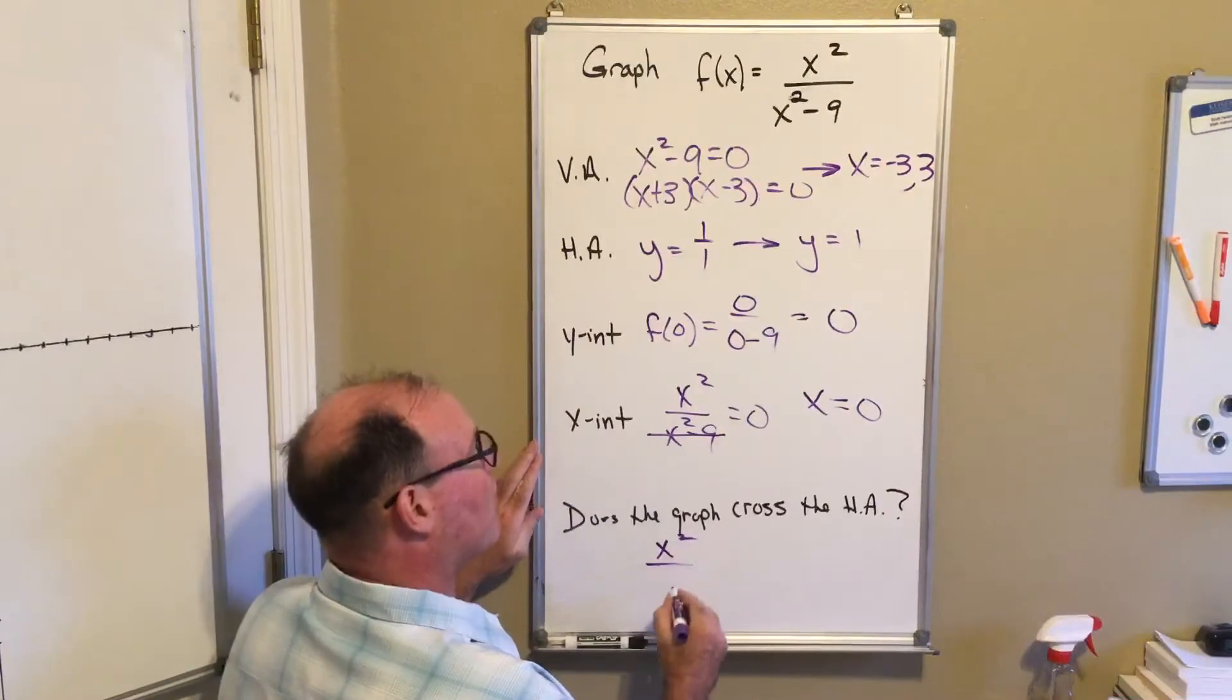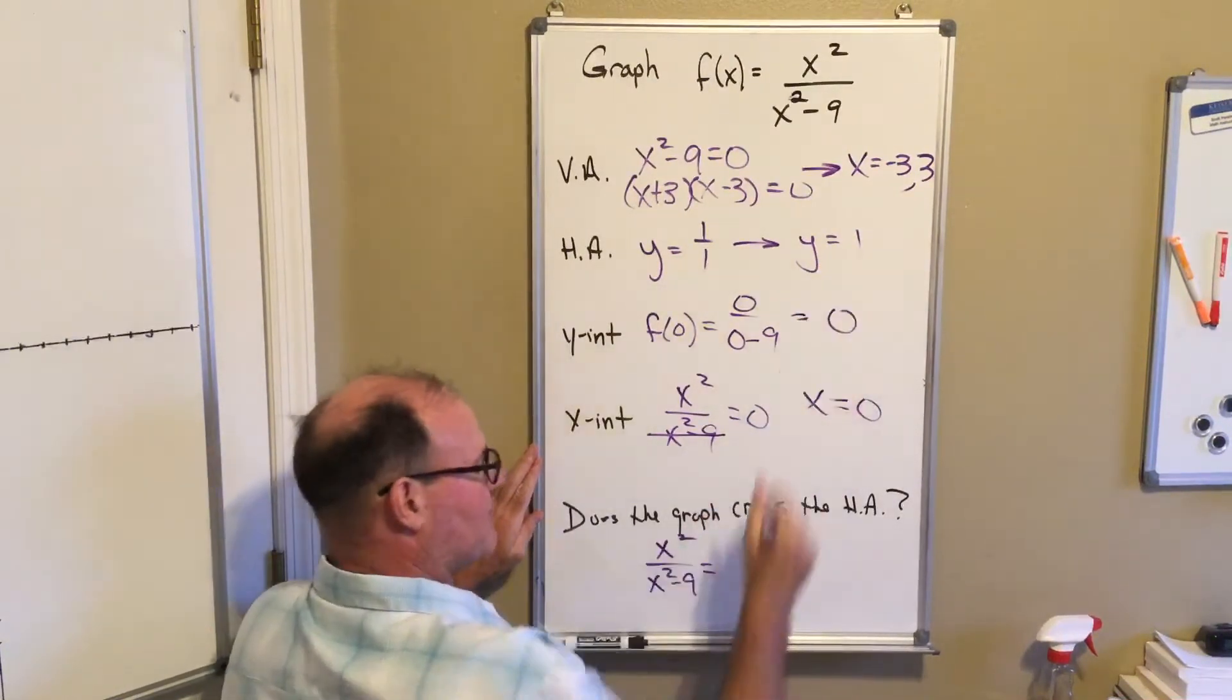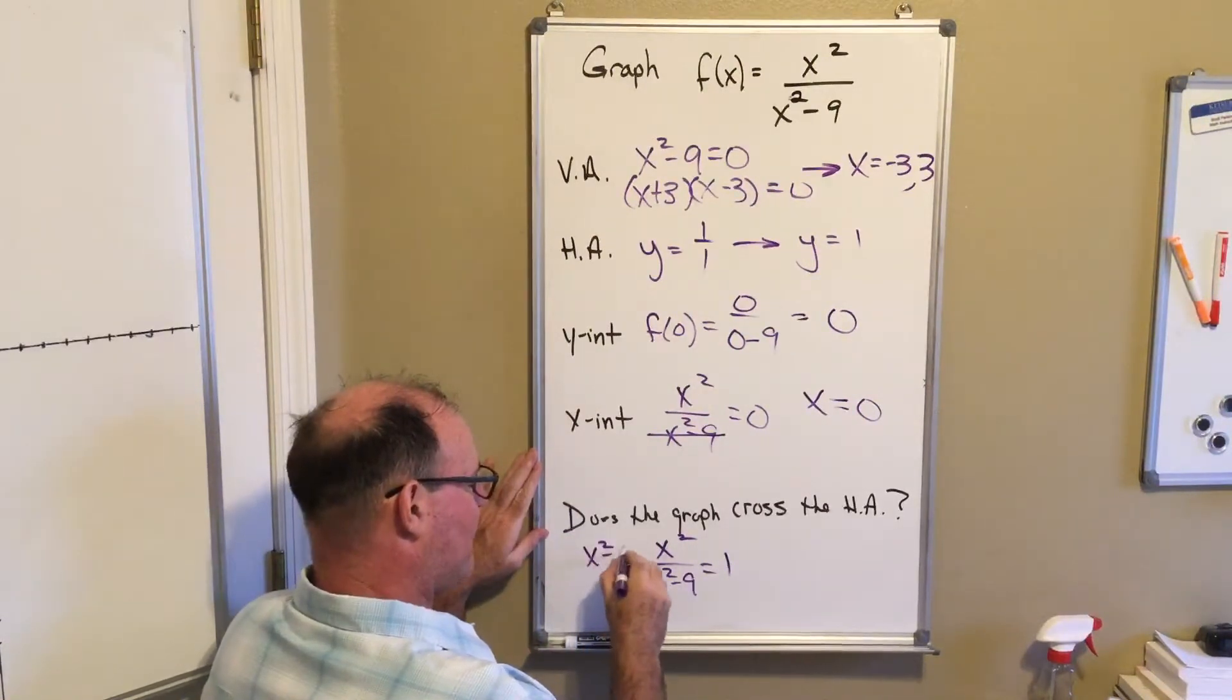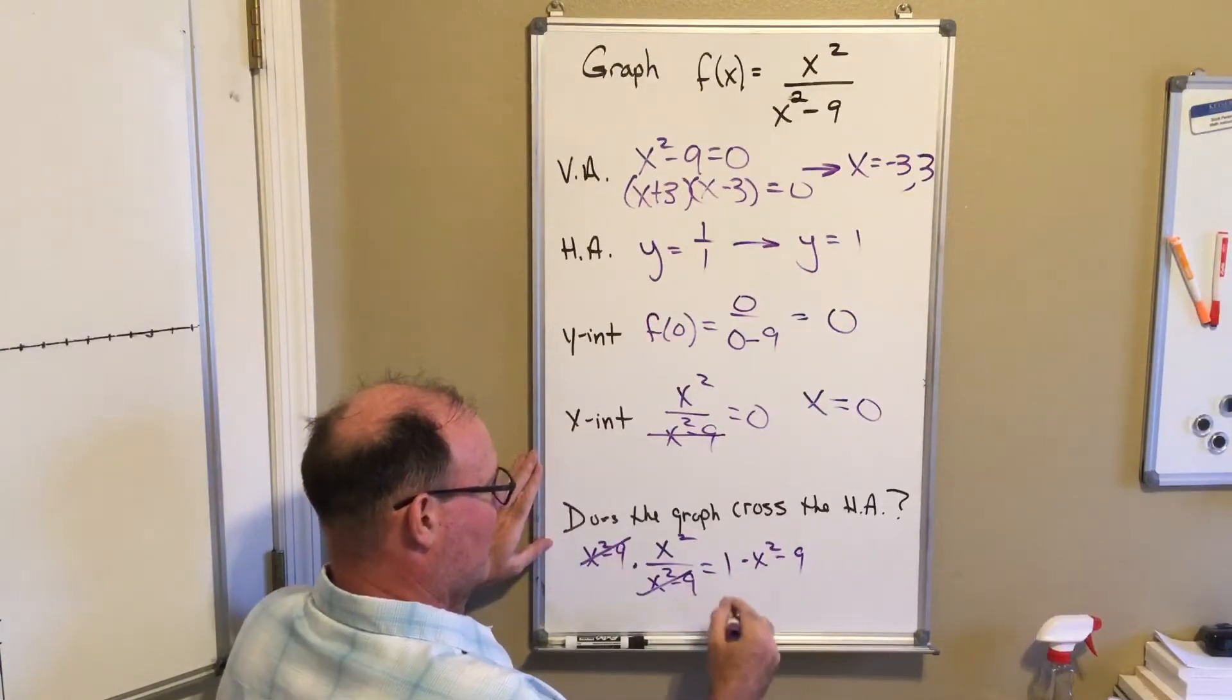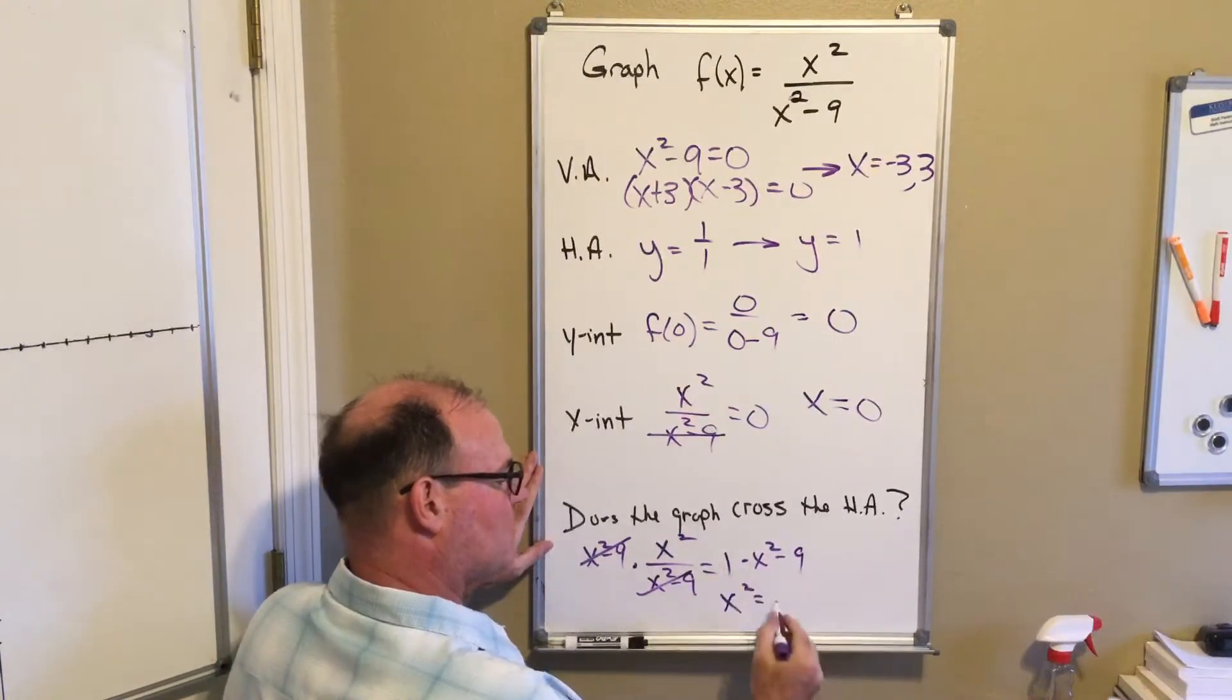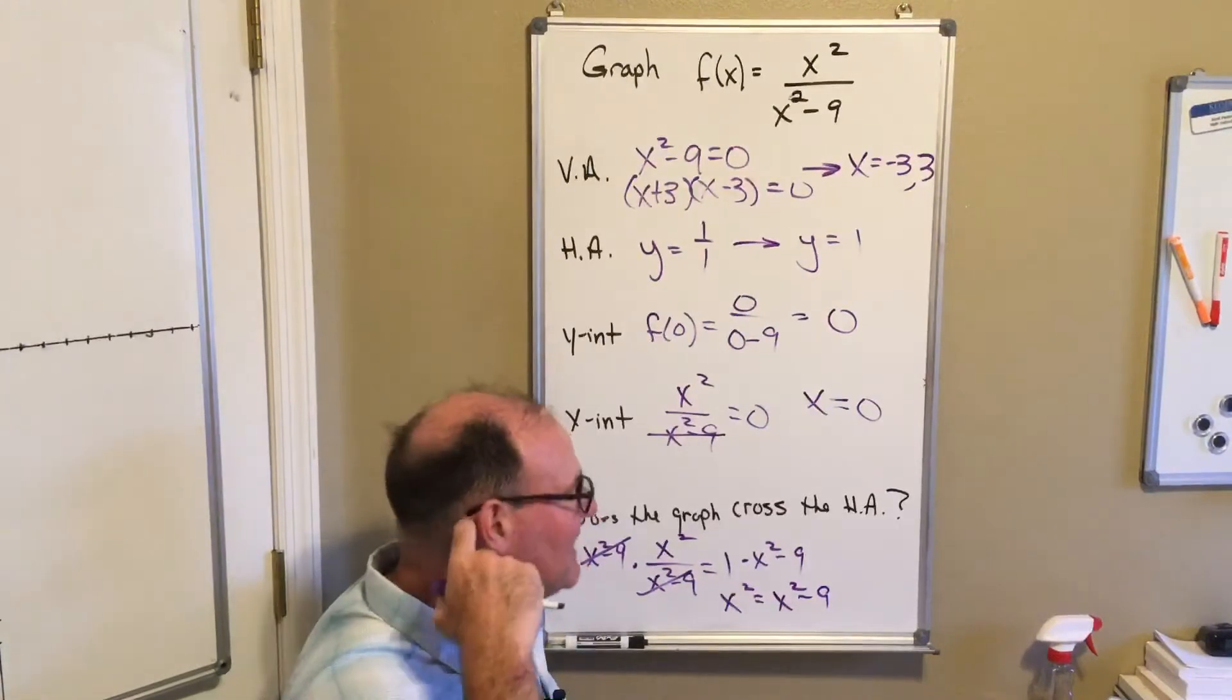Lastly, does the graph cross the horizontal asymptote? So we've got x squared over x squared minus nine equals the value of the horizontal asymptote, which is one. I'm going to multiply both sides by the common denominator, and so what I'm left with is x squared on the left.